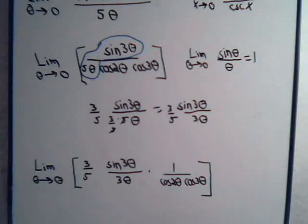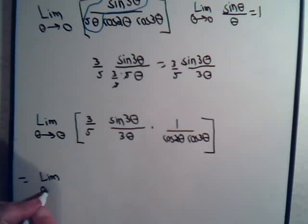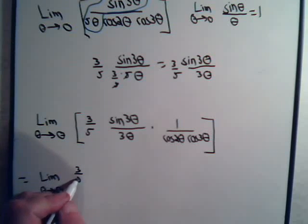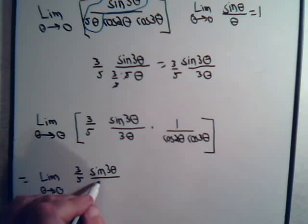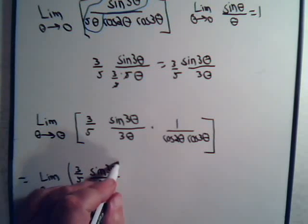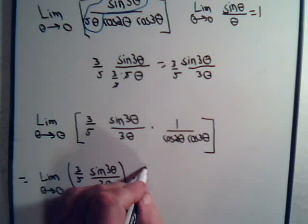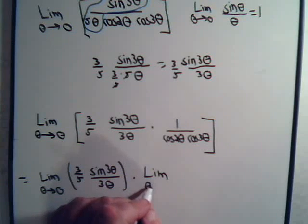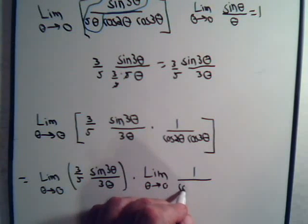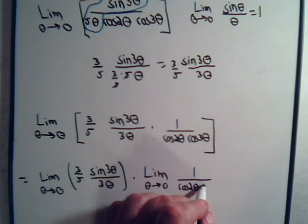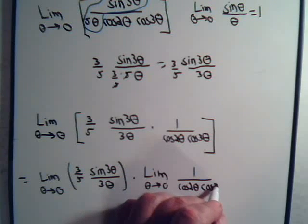So let's just write that out real quick. This will equal the limit as theta approaches 0 of 3 fifths times the sine of 3 times theta divided by 3 times theta, times the limit as theta goes to 0 of 1 over the cosine of 2 theta times the cosine of 3 times theta.